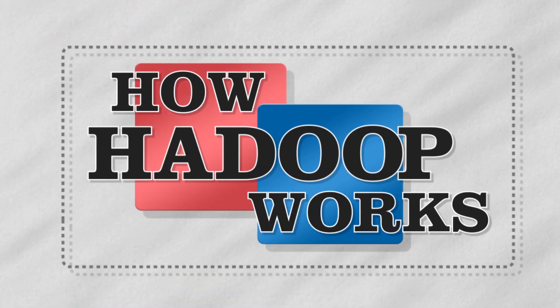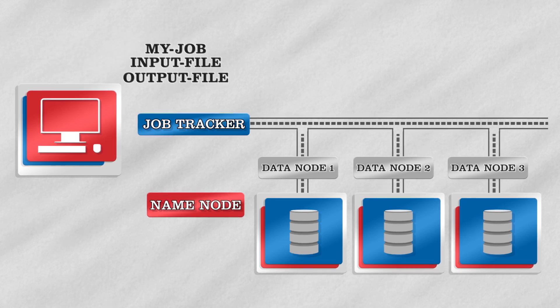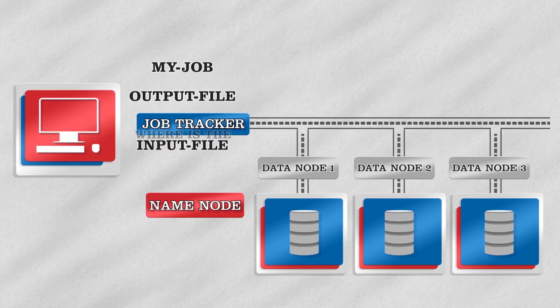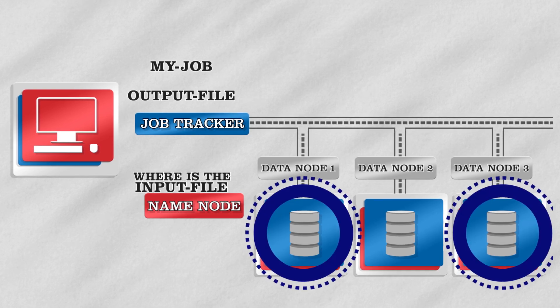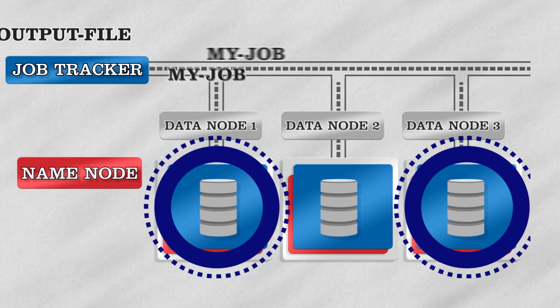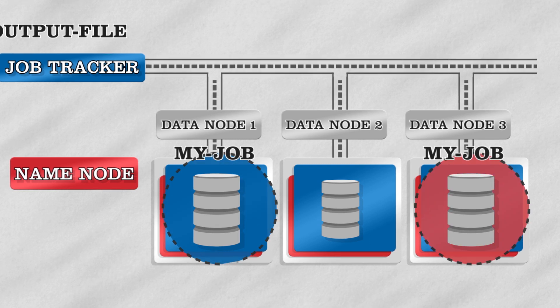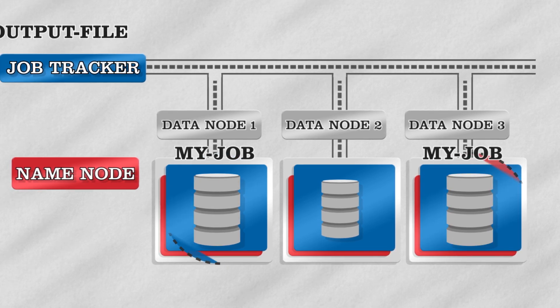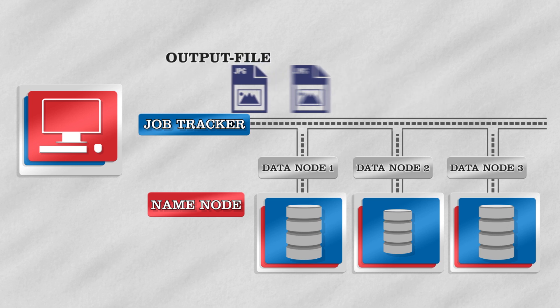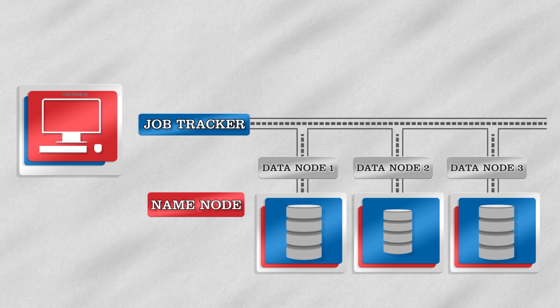How does Hadoop work? Suppose what I wanted to do was look for an image spread across many hundreds of files. First off, Hadoop has to know where that data is. It queries something called a name node to find out all the places where the data file is located. Once it's figured that out, it sends your job out to each one of those nodes. Each processor independently reads its input file, looks for the image, and writes the results out to a local output file. That's all done in parallel. When they all report finished, you're done.